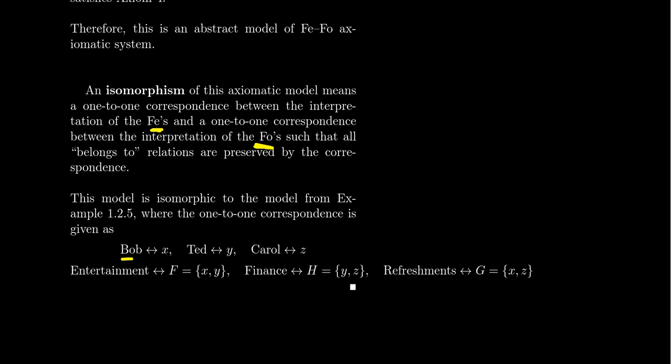Bob belonged to the refreshment committee. X belongs to G. So does Carol. Carol belongs to refreshments, so does Z. That is preserved. If we look at the middle one right here, finance, Ted is on finance. Y is on H. Carol is on finance. Z is on H.